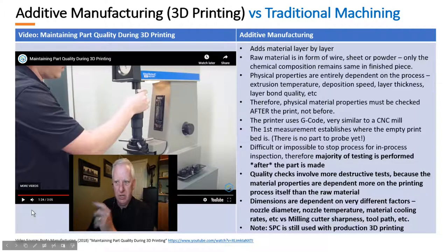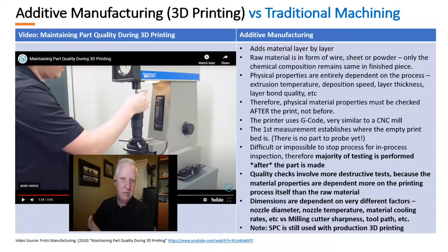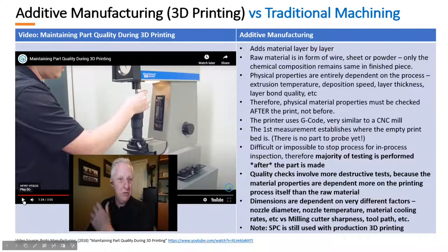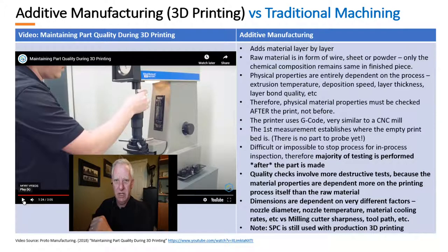Next, he's going to talk about hardness testing. This assumes that hardness is developed as part of the process — it's not dependent on the raw material, it's dependent on the process. So hardness testing is certainly a traditional quality test, but it was less necessary in traditional machining and is now a critical piece of additive manufacturing.